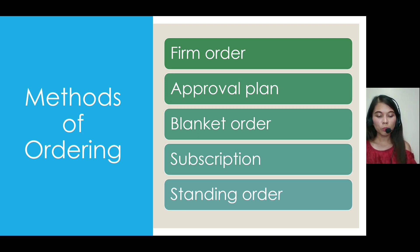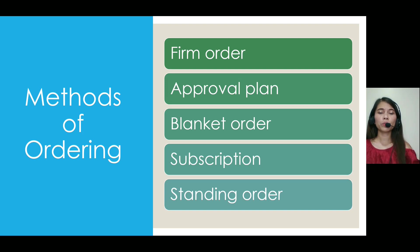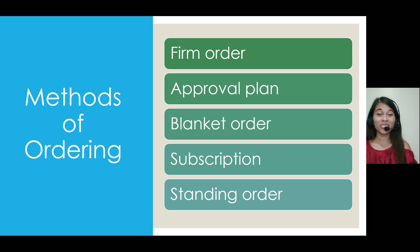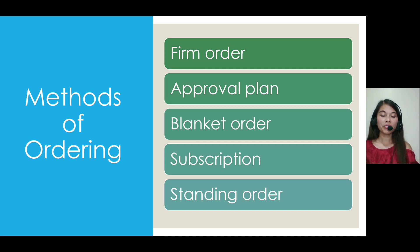Approval plans also specify series, formats, price range, language, and many more. Blanket order is an agreement in which a publisher or dealer supplies to a library one copy of each title as issued, on the basis of a profile established in advance by the purchaser. It is non-returnable.